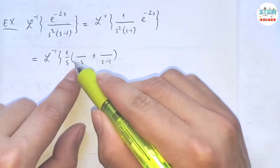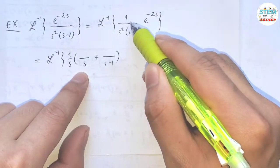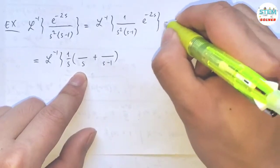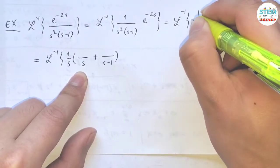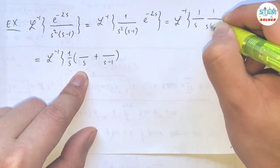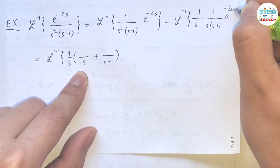So after I factor out 1 over s, I have 1 over s times s minus 1, and let me add a step here. Let me factor out 1 over s, and I have 1 over s times s minus 1 times e to the negative 2s, right?